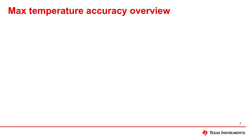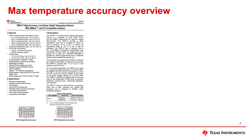First, let's begin by discussing temperature accuracy. For this example, we will look at TI's TMP117 sensor data sheet. Here is the first page of the data sheet. In most cases, the temperature accuracy spec is one of the first values listed.